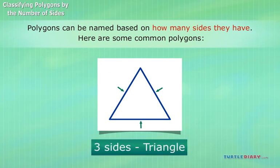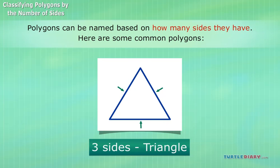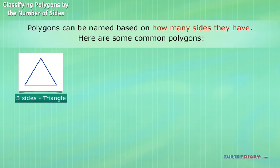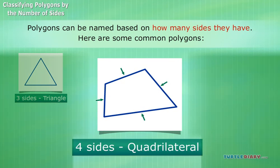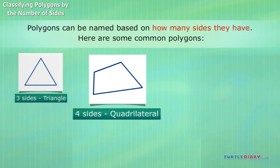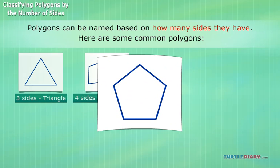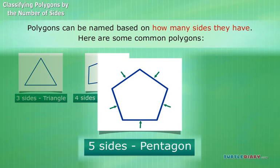Three sides: triangle. Four sides: quadrilateral. Five sides: pentagon.